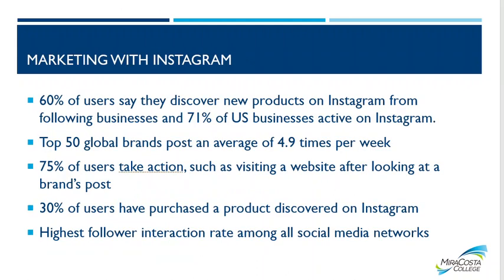Marketing with Instagram: 60% of users say they discover new products on Instagram from following businesses, and 71% of US businesses are active on Instagram. Top 50 global brands post an average of 4.9 times per week. 75% of users take actions such as visiting a website after looking at a brand's post — that's huge. 30% of users have purchased a product discovered on Instagram. It has the highest follower interaction rate among all social media networks; it's just really easy to engage on this platform.